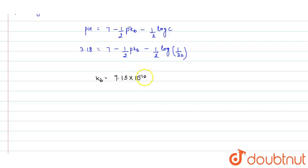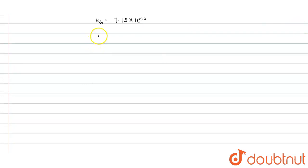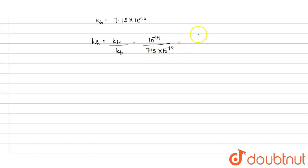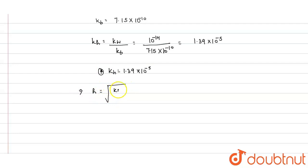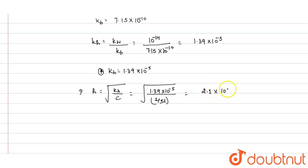Now we find the hydrolysis constant and degree of hydrolysis. The hydrolysis constant Kh equals Kw divided by Kb, so 10⁻¹⁴ divided by 7.5 × 10⁻¹⁰, giving Kh equals 1.39 × 10⁻⁵. The degree of hydrolysis equals the square root of Kh divided by concentration, which gives 2.1 × 10⁻².